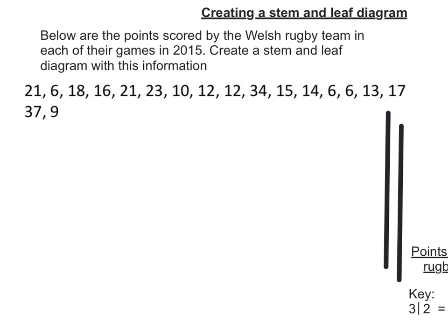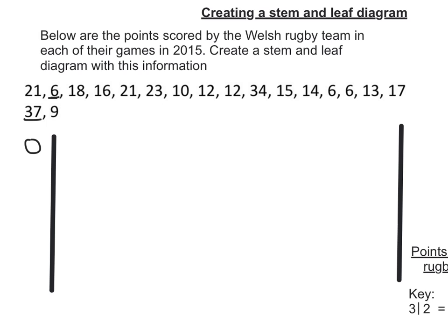The first thing I'm going to do is draw a vertical line so that I have the stem to the left and the leaves to the right. Now let's work out what my stem needs to be between. The lowest seems to be 6 and the highest seems to be 37. So I'm going to make my stem the 10s: 0, 1, 2, 3. And I don't need to go any further.